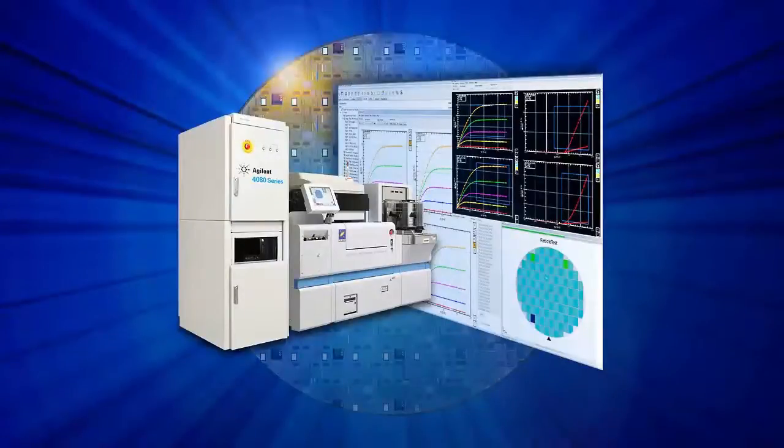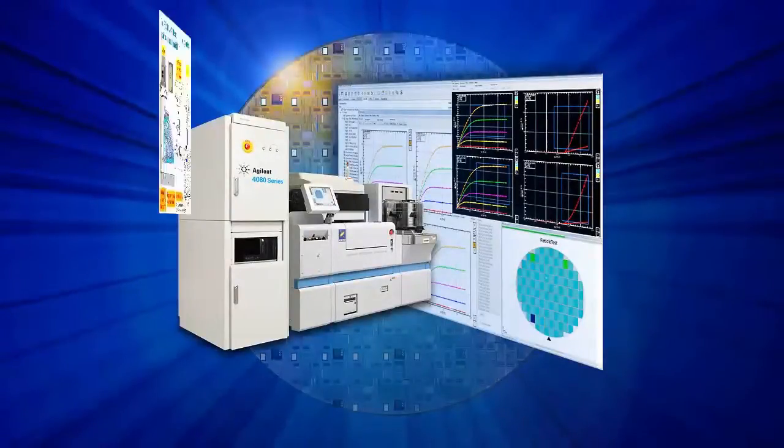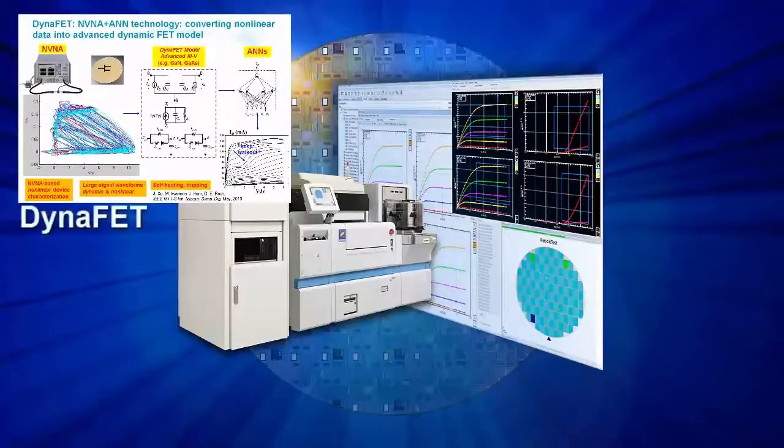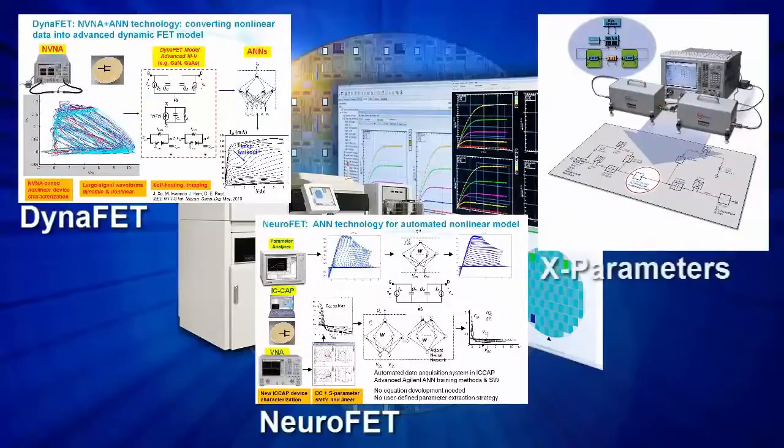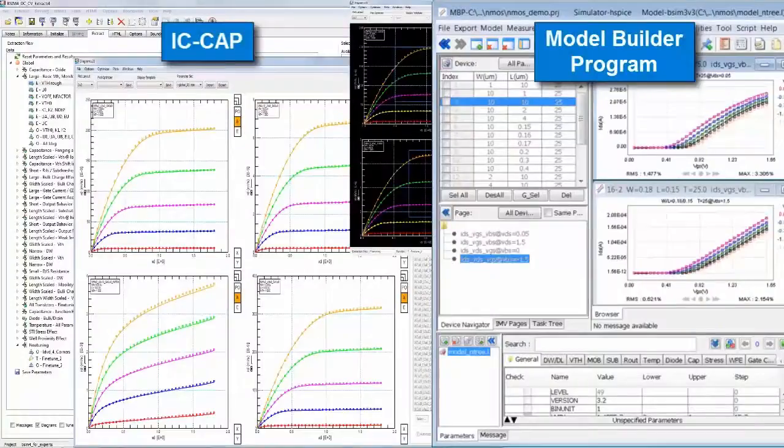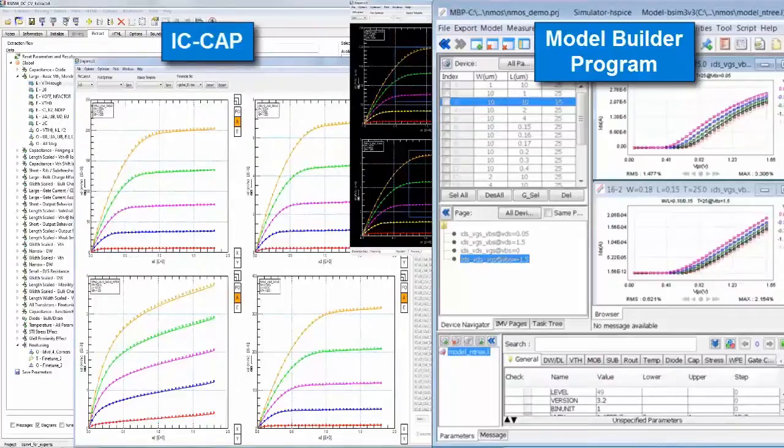Not only does Agilent provide the hardware and software required for device characterization, as new semiconductor technologies are introduced, Agilent continues to pioneer the development of new RF and microwave models that deliver the most accurate results. Our IC cap and model builder program are used throughout the industry by semiconductor manufacturers to create accurate device models to aid in your successful design.